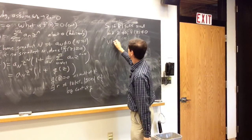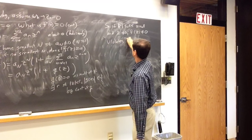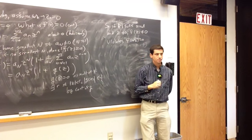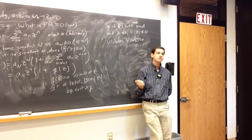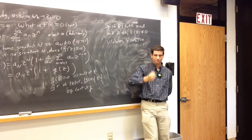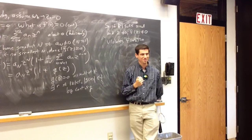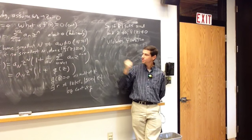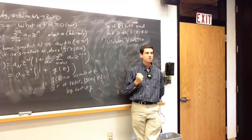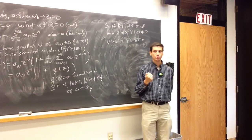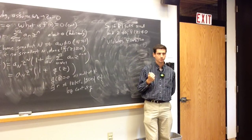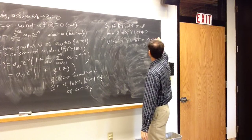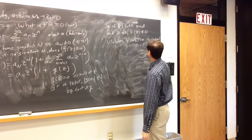The only way f of some point could be 0 is either z equals 0 or g equals negative 1. So if z is sufficiently small and z does not equal 0, f of z does not equal 0. But this violates f(w_k) = 0, because the whole point was we had a sequence accumulating at 0 where the function was 0 at each of those points. We just showed the function can only be 0 in a small neighborhood at 0 itself. Contradiction.